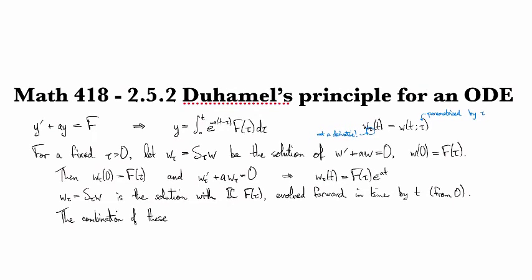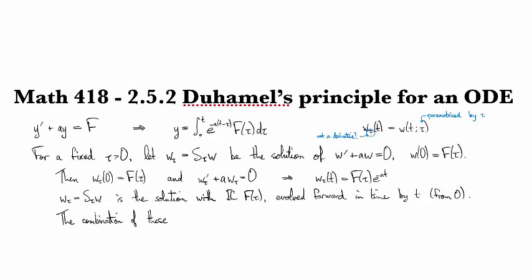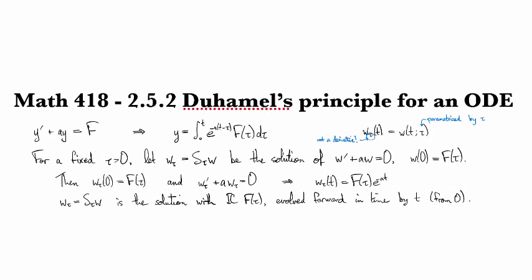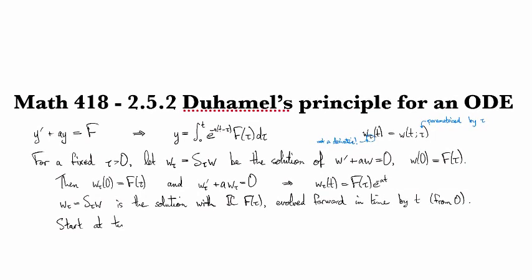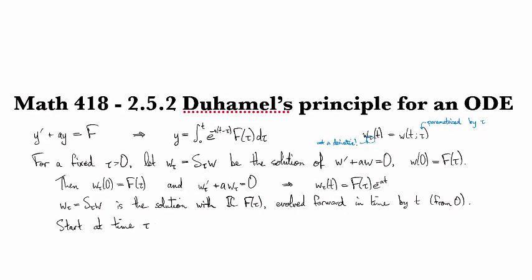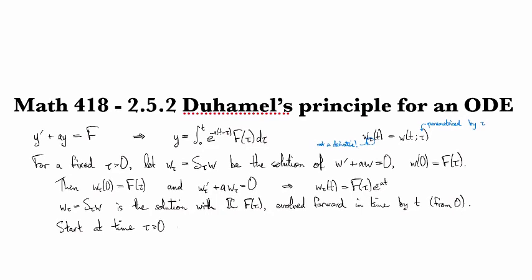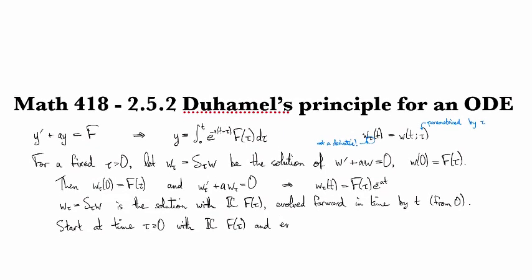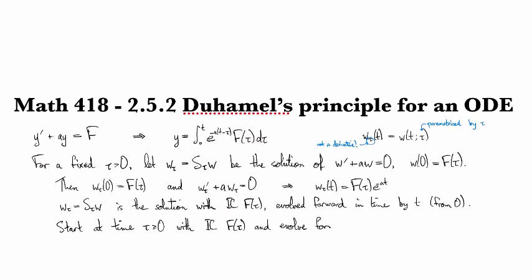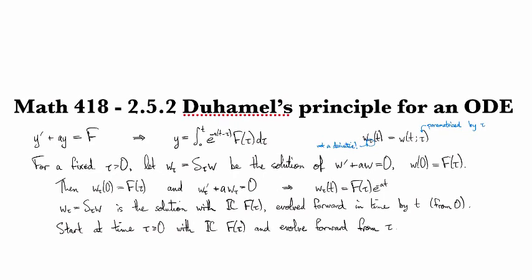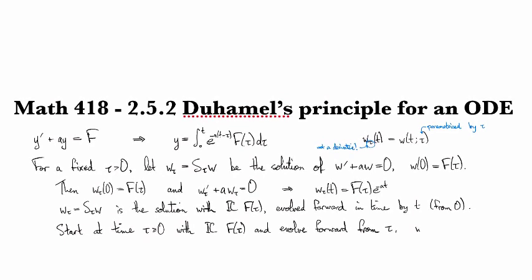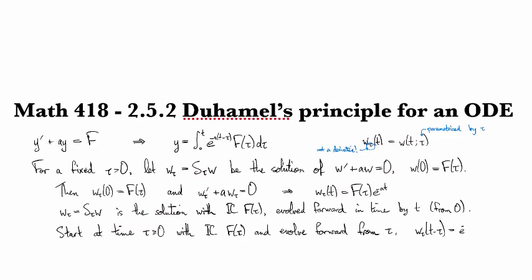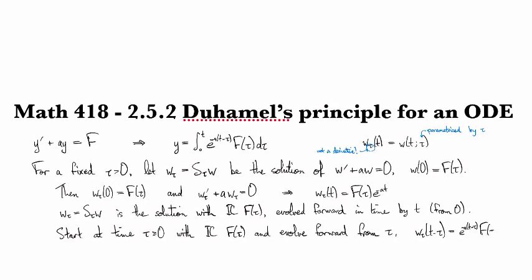So then the combination of all these kinds of things, let me back up. So if we want to start at some time that's not necessarily zero with initial condition F of tau, and we want to evolve forward from tau, then the thing that we're going to be looking at is W tau T minus tau, which is E to the minus A T minus tau, F of tau.